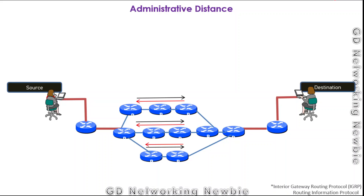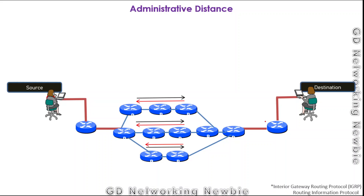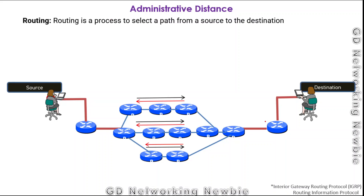In this video we are going to discuss administrative distance. To understand it, let's say we have a source and a destination, and we have some data or message which we want to send from source to destination. From source to destination we can have multiple paths to reach there. These routers perform routing, which is a process to select the best path from source to destination.